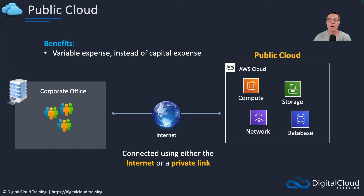The benefits of this model: you have a variable expense instead of a capital expense — you're paying on a monthly basis for what you use. There are exceptions; AWS does have some larger discounts if you lock in for a year or three years. But most services are available on a monthly expenditure where you're just paying for what you use. You've also got economies of scale — AWS are huge, with hundreds of thousands of customers all over the world, and they invest very heavily in their platforms and in the software and services they build, which means they can reduce the cost to you as the end consumer.